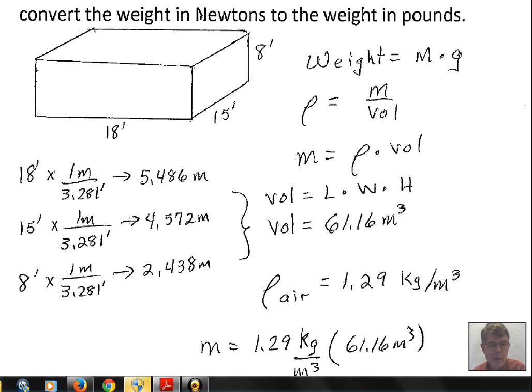We were given the dimensions in feet. Let's convert those to meters. The conversion factor is that there's 3.281 feet for one meter. That goes in the denominator to cancel off the feet units.